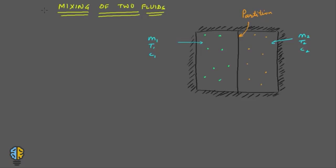Now let's talk about the second application of the entropy principle — the mixing of two fluids. This is one system, and it is an adiabatic enclosure, so no heat can flow across the system boundary. We have divided this complete system into two subsystems.